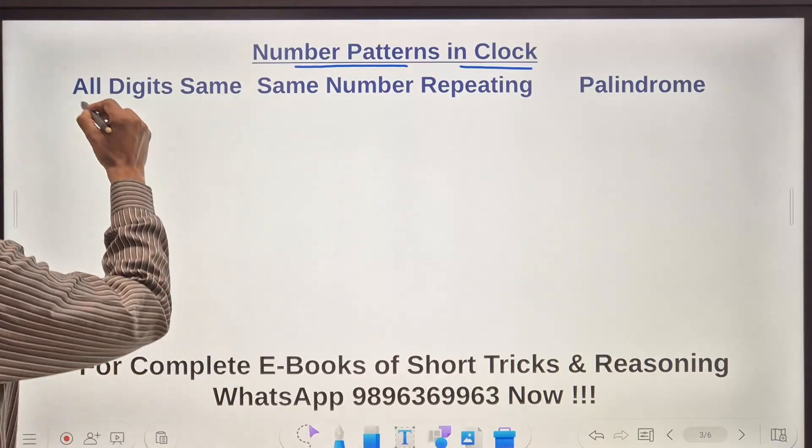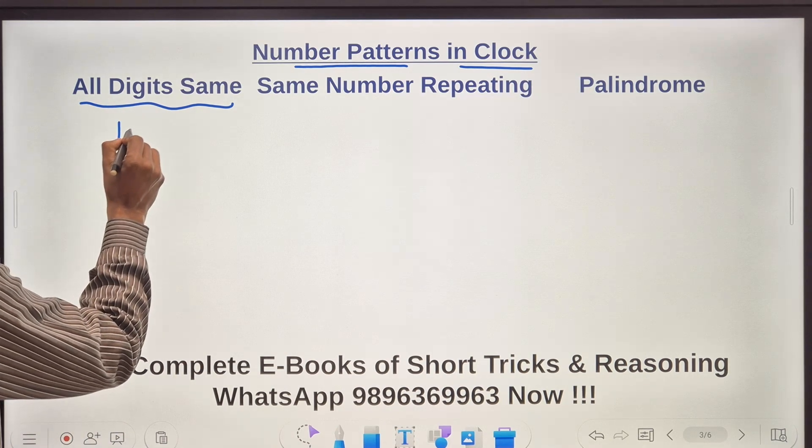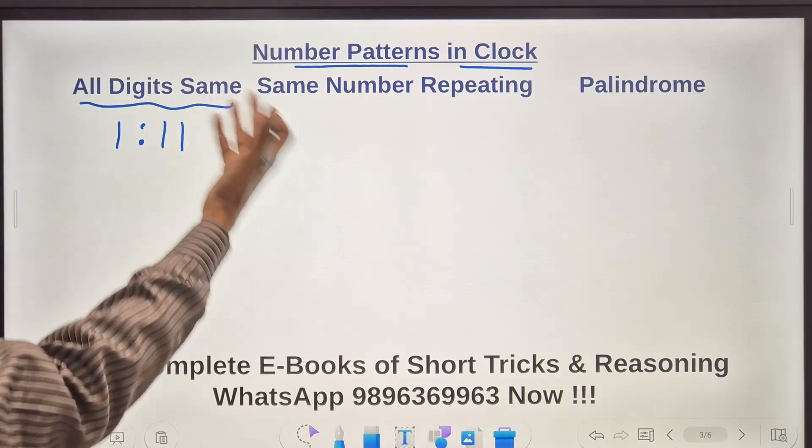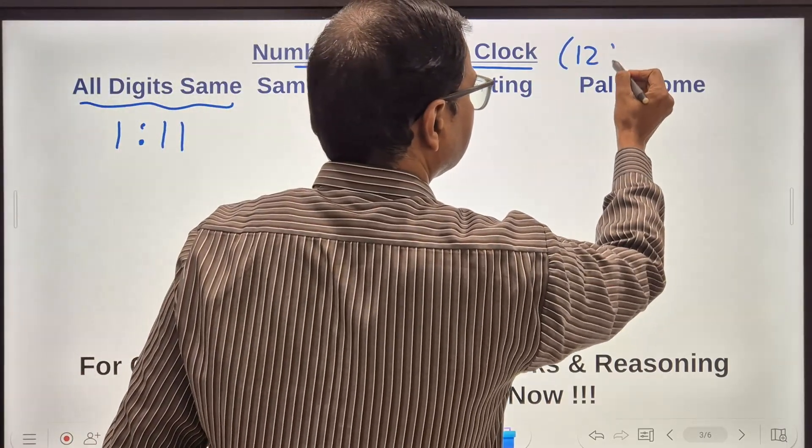Now the first type of pattern is all digits same. So all digits same means when you write the time every digit is same like 1:11 am or 1:11 pm. I am talking about a 12 hour time format.